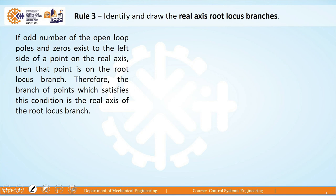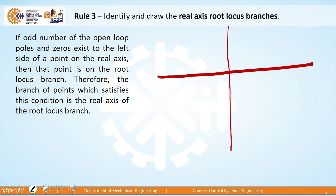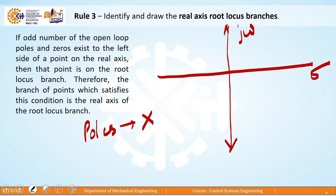Rule number 3 is to identify and draw the real axis root locus branches. The x-axis represents the real axis (sigma) and the y-axis represents jω, the imaginary axis. Poles are plotted with a small cross mark and zeros with a small circle. The rule states: if an odd number of open loop poles and zeros exist to the right of a test point on the real axis, then that point is on the root locus branch.